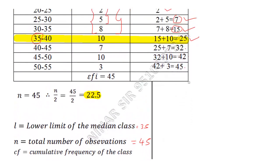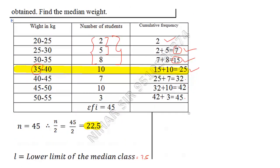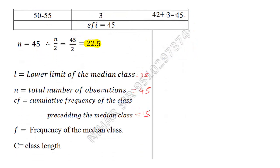Then frequency of median class. What is the frequency of median class? That is 10. And class length is 5. That is simple. 55 minus 50, that is class length, that is 5.